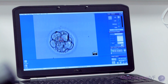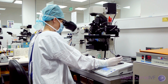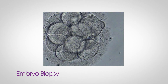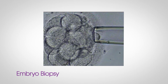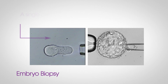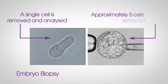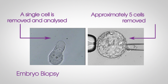Some patients' embryos may require testing for genetic or chromosomal abnormalities. This is done by a technique known as embryo biopsy. An embryo biopsy can be done either three days after egg collection, when one or two cells are removed from the embryo, or on day five or six, when approximately five cells are removed. The biopsied cells are then analysed in-house at our specialist laboratory called the Pre-Implantation Genetic Diagnosis Laboratory. After analysing the cells removed from the embryos, scientists can determine which embryos are most likely to result in the birth of a healthy baby.